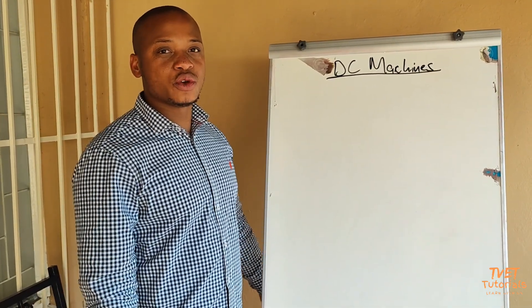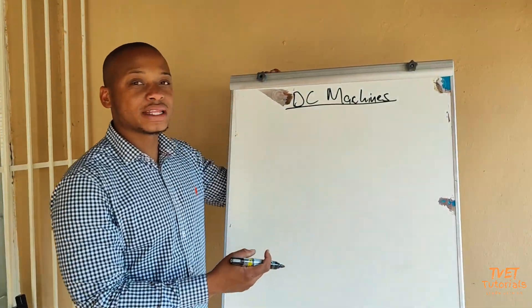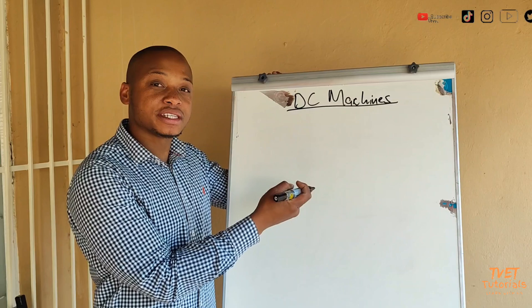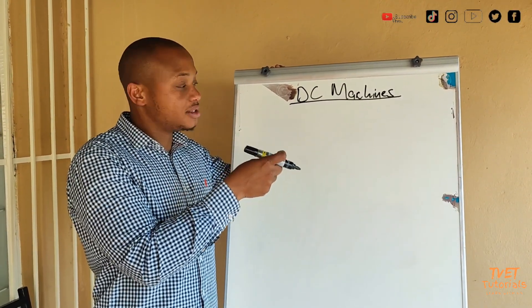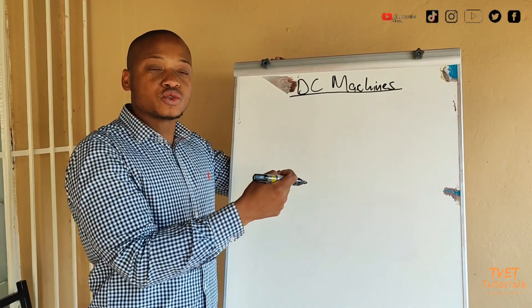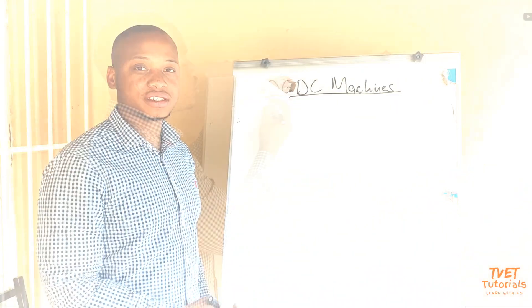So in today's video we'll be looking at module number one which is DC machines. Under DC machines we look at the different types of DC machines that we have, the circuit diagrams that are involved, and also the different calculations that are involved with direct current machines.